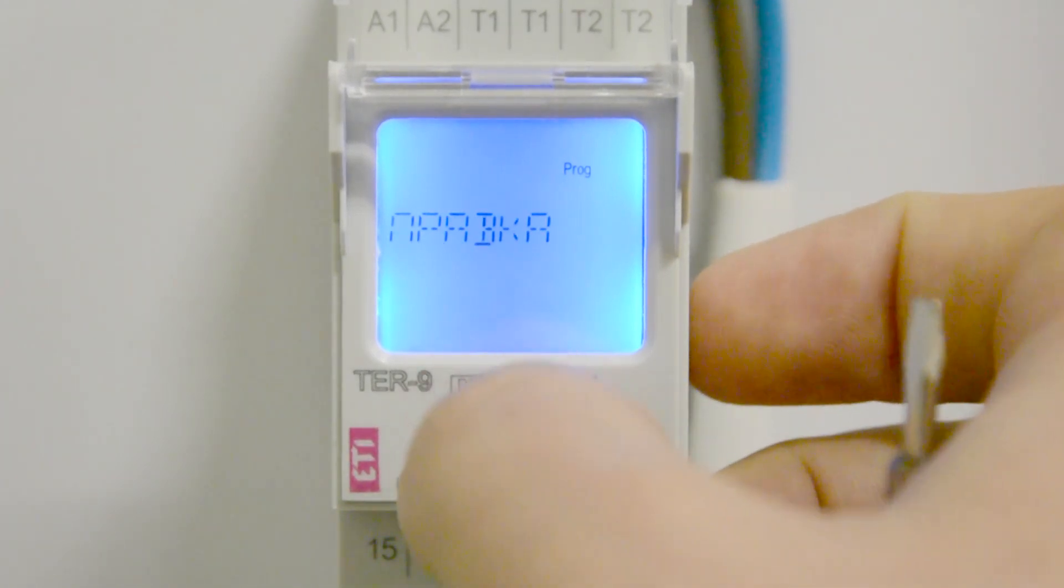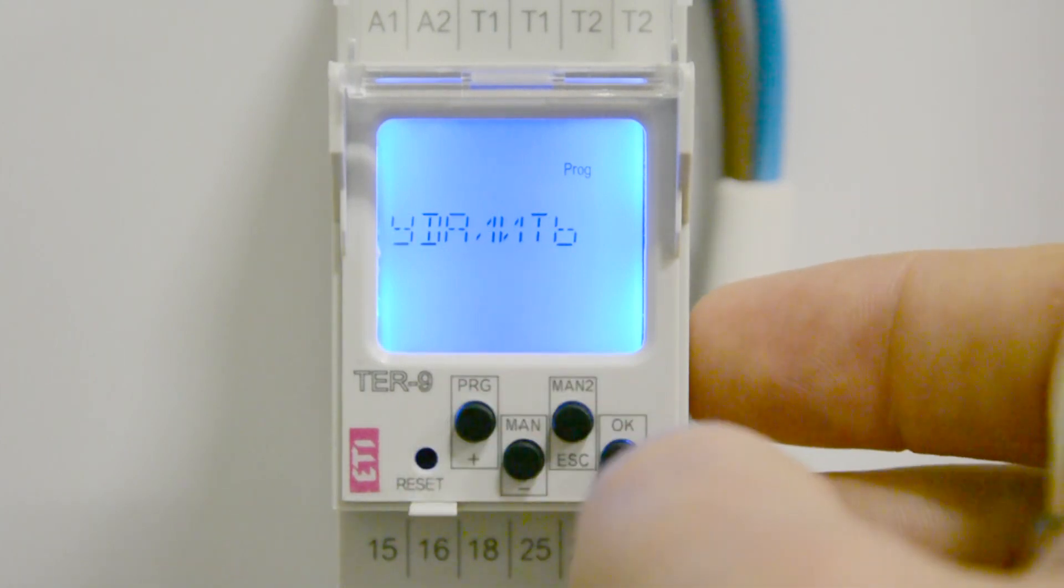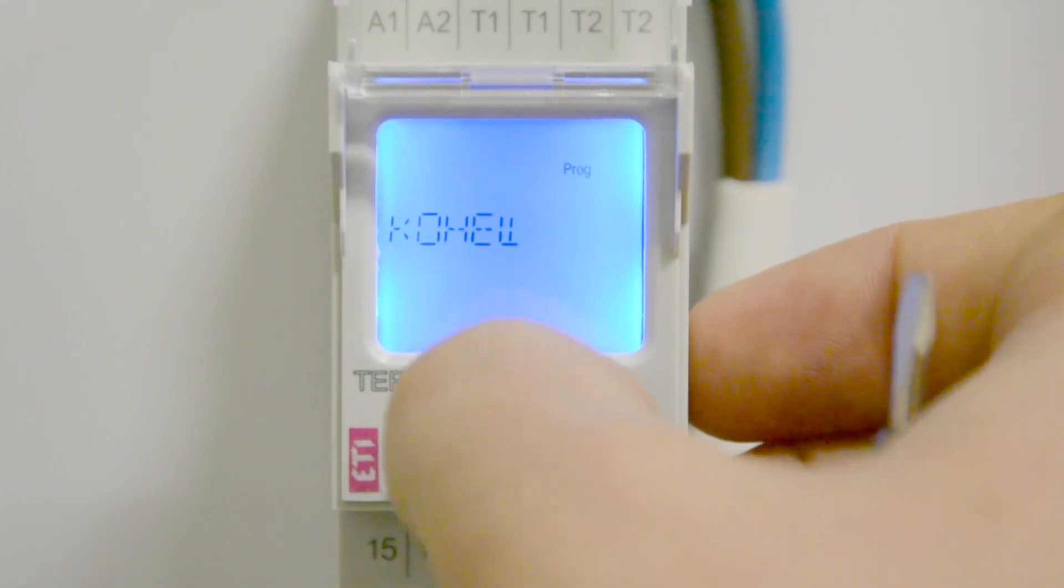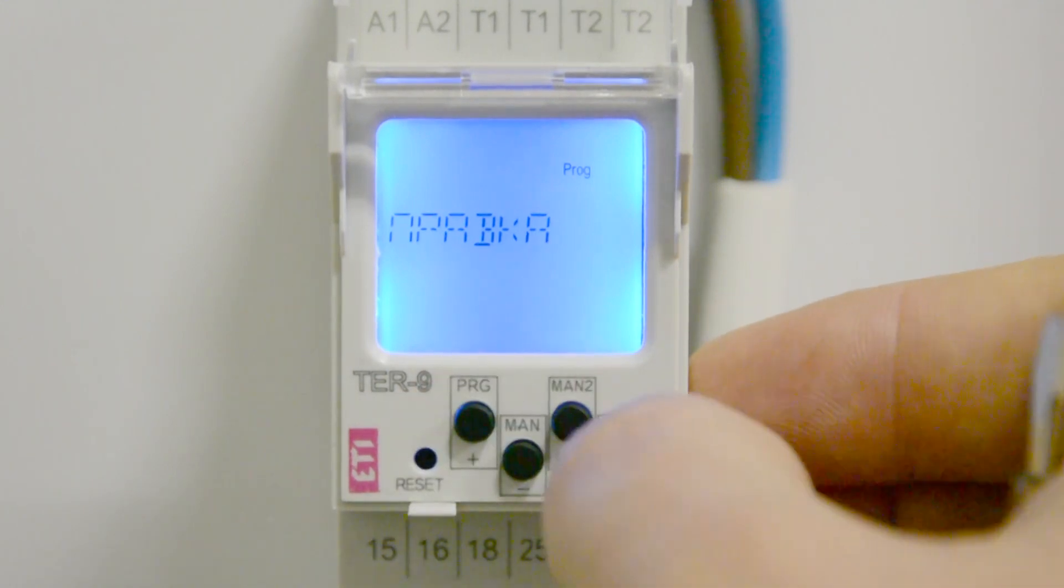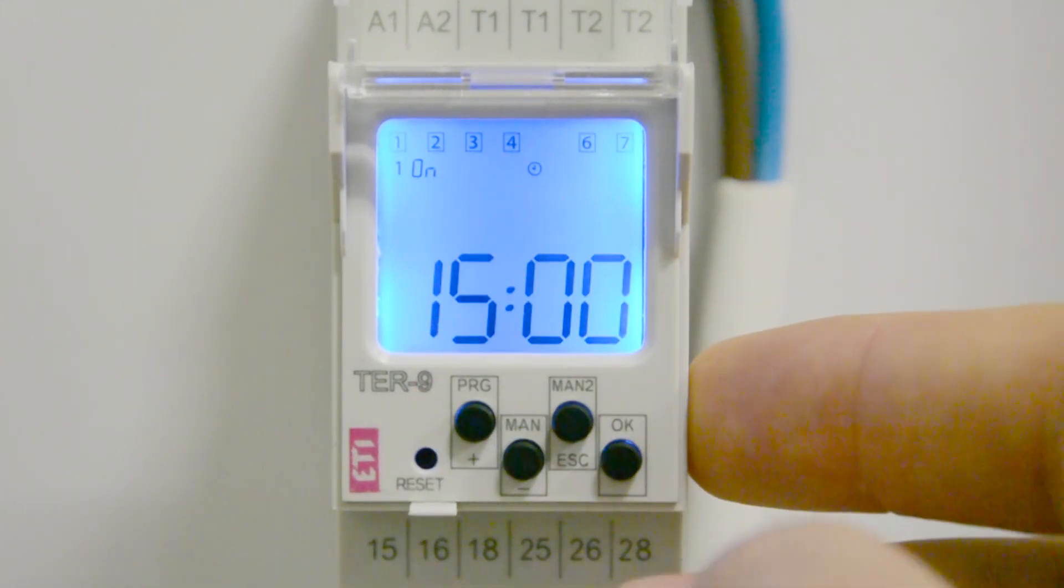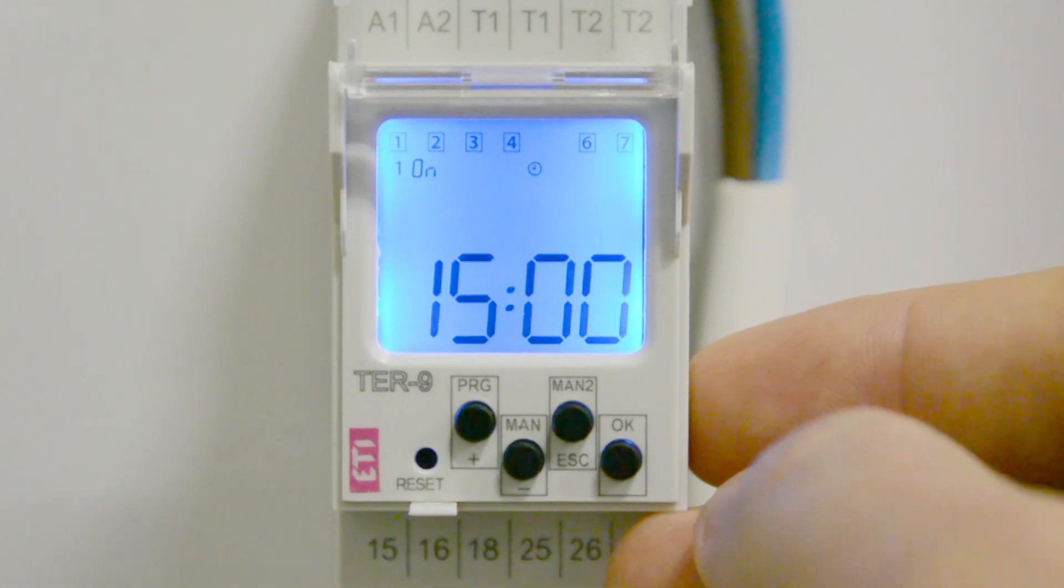By pressing the plus and minus buttons, we move between the submenu items, and by pressing the OK button we confirm the selection.